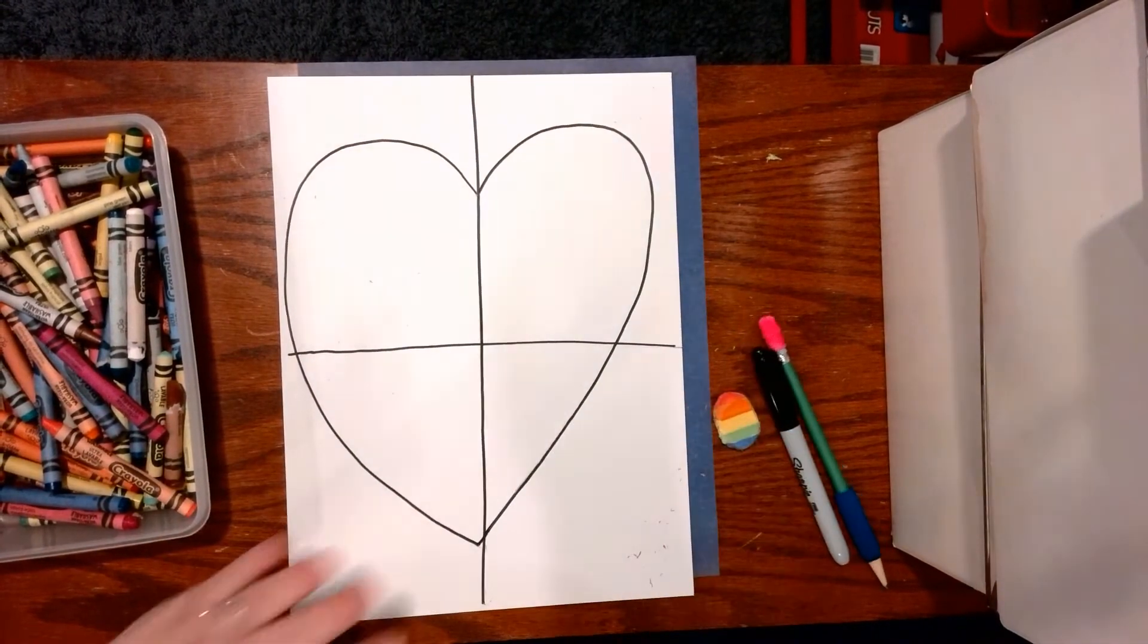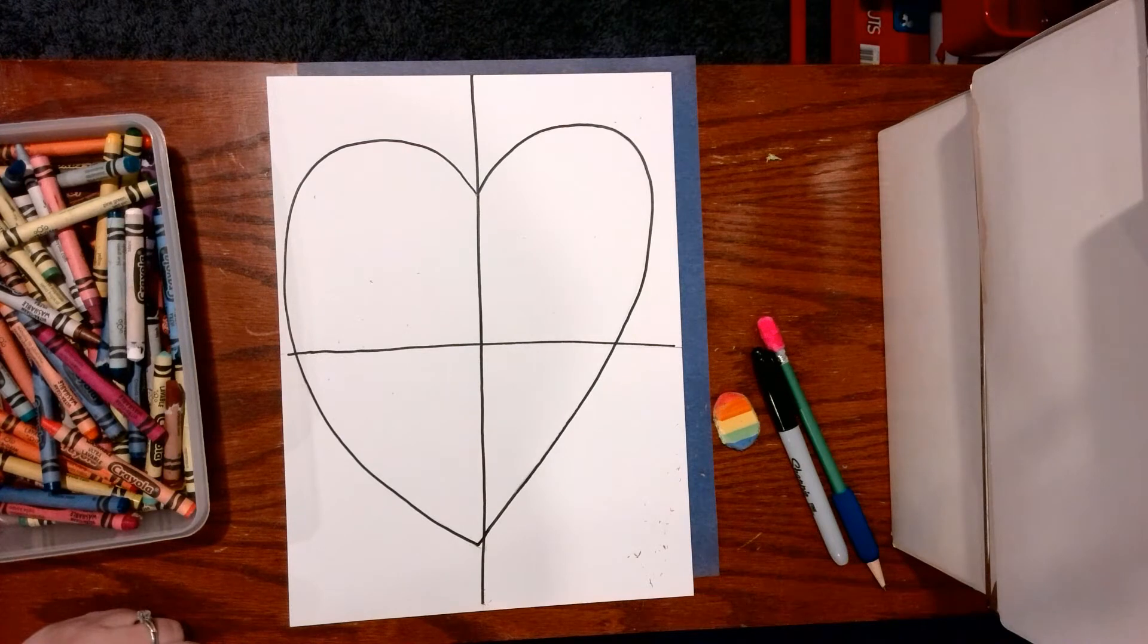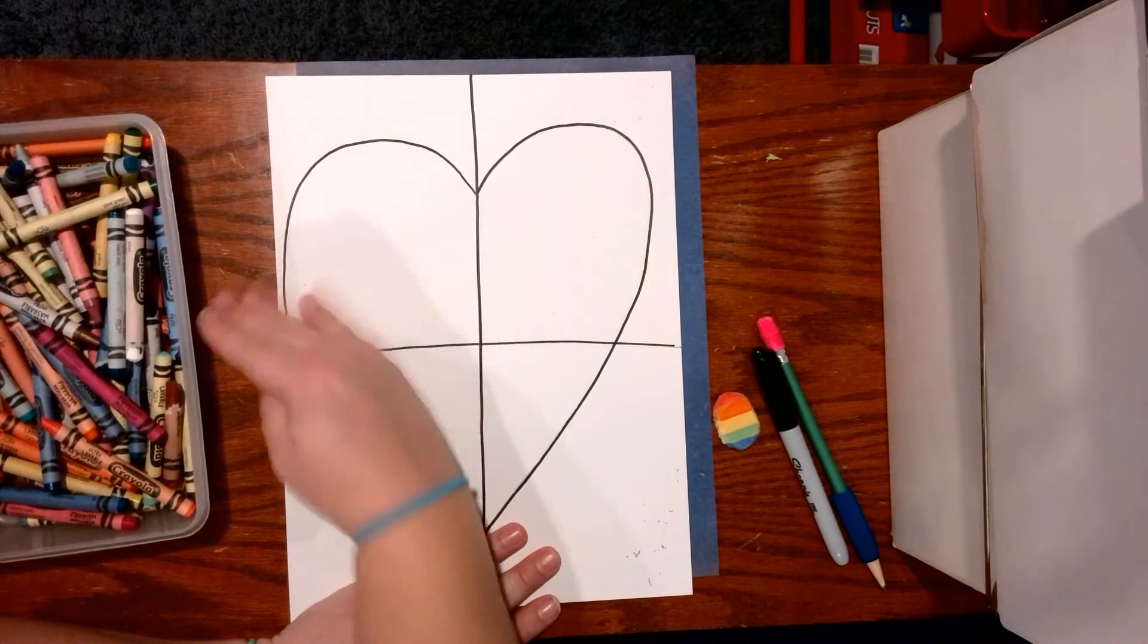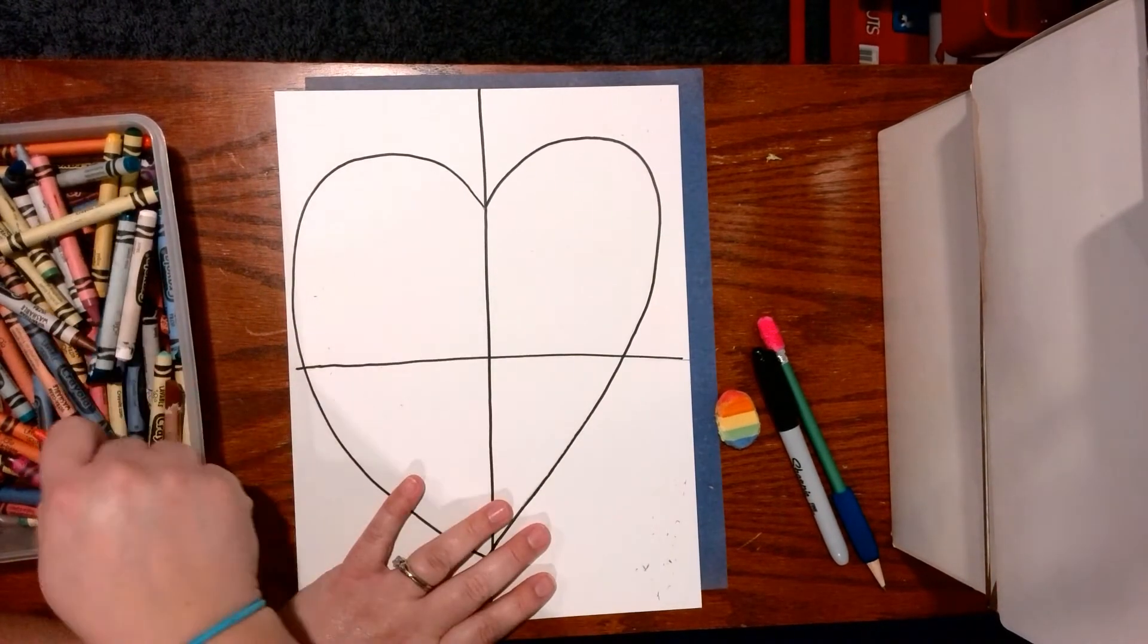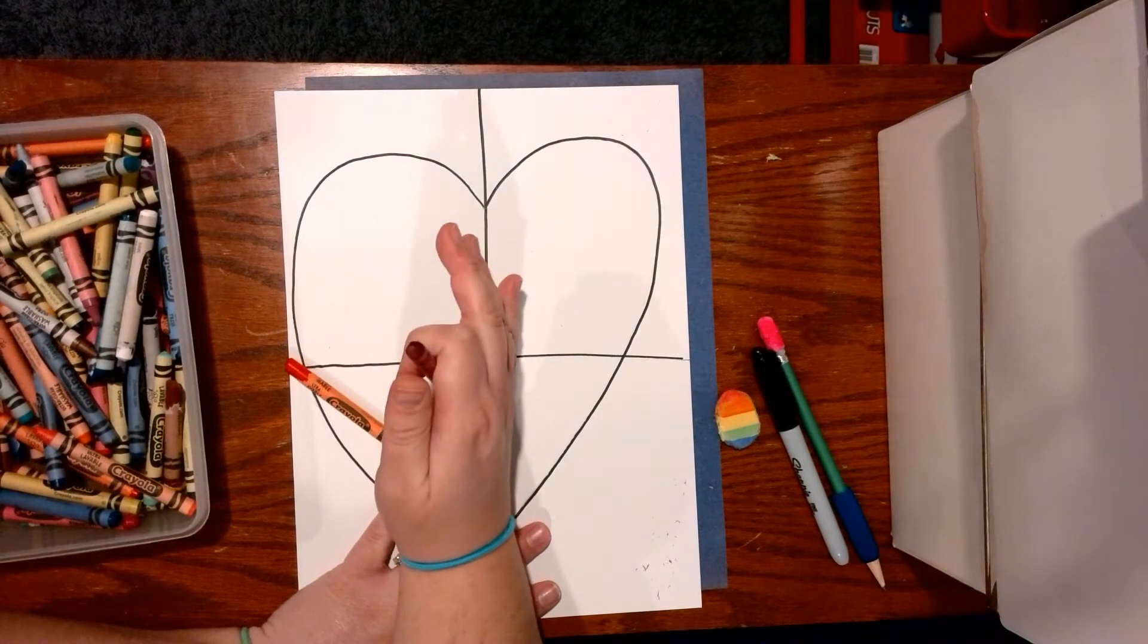All right. Now you are going to be picking out different colors for each section. You're going to use two colors. So in this first section of my heart right here, I'm going to pick out two colors and I'm going to make a pattern in there repeating.